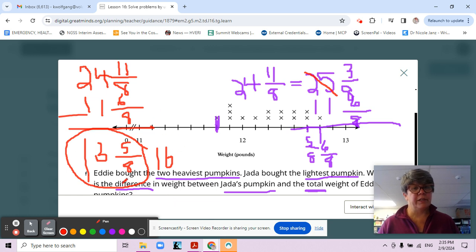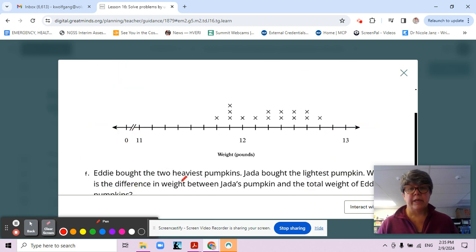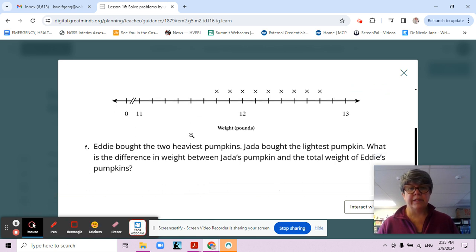Make sure you write that as a sentence. The difference between Eddie's two pumpkins and Jada's one pumpkin is 13 and five eighths pounds. You do need to write that as a sentence in your notes. Make sure if you don't have it, pause me and get it on there. Thanks a lot, and we have one more question talking about this data.